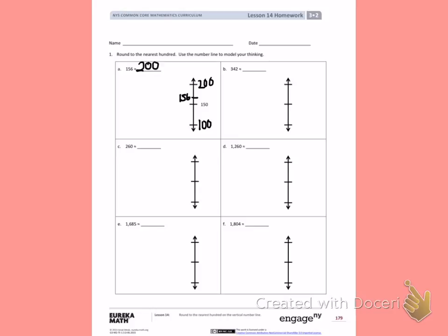Letter B. I have 342. The hundreds that 342 would fit between are 300 and 400. The halfway number would be 350. 342 comes before 350, which means it's below the halfway number. That tells me that I need to round down to 300. Try letter C on your own.